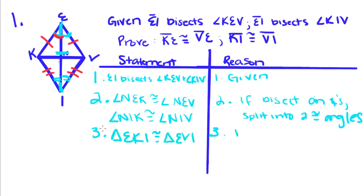And oh, I'm sorry, I almost forgot a step. First, I'm just going to insert this right here. This will be 2.5. First, we have to say that EI is congruent to EI, and that's reflexive property.